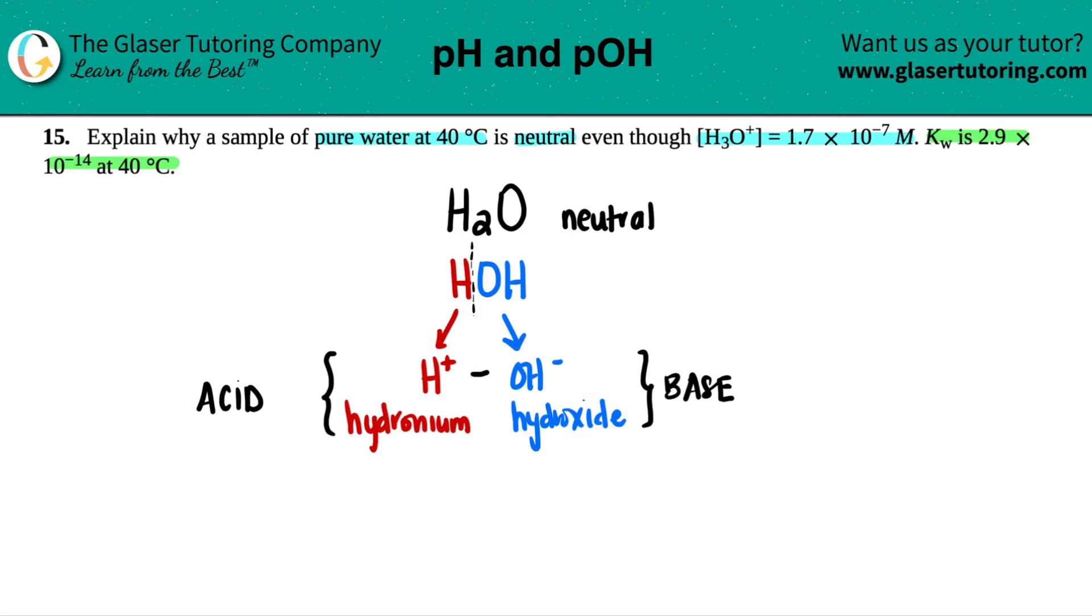So that means that the amount of H plus that you have in water is the same as the amount of OH minus that you have in water. So technically, in theory, these should be equal to each other. Now, we just have to figure out in math terms, calculations also why it's neutral.